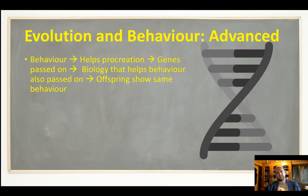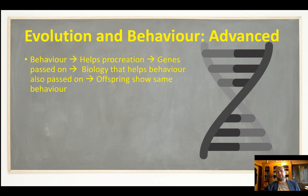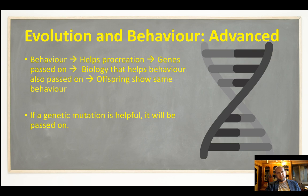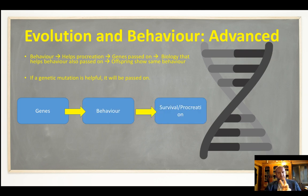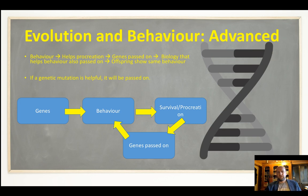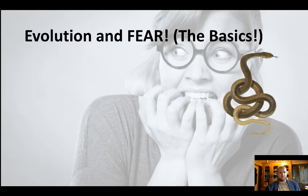Going a little bit more advanced: if a behavior helps procreation or survival, our genes get passed on, and the biology that supports that behavior also gets passed on, so our offspring show the same behavior. Genetic mutations are key in the evolutionary process — they're the trigger at the beginning. If there's a genetic mutation helpful for survival or procreation, it gets passed on too. So if we start with a gene — maybe a mutation — and it leads to a behavior that helps us survive or procreate, that gene gets passed on. That's how the behavior continues throughout history.